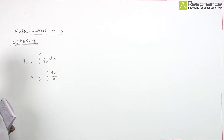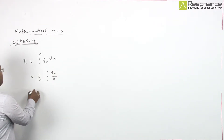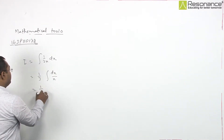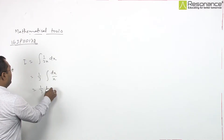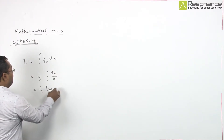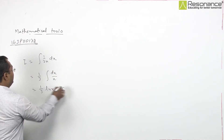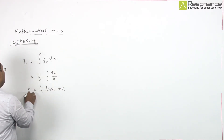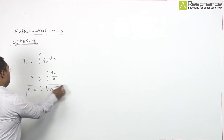This is a basic formula which is ln x. So our result will be 1/3 ln x plus some constant c.